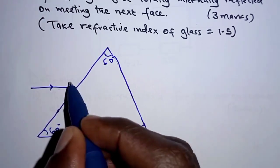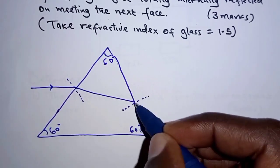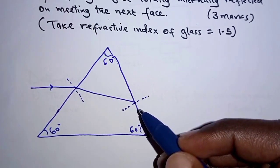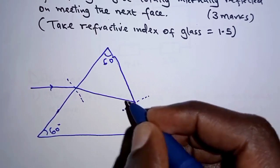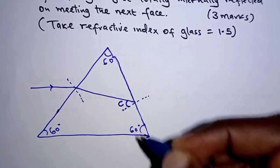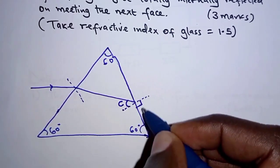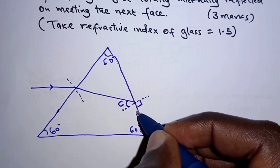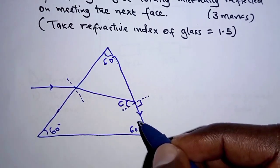And then it is refracted, and then on this other face we're told that total internal reflection is just about to take place. So that means that the angle of incidence here is the critical angle, and then on this other side we have 90 degrees, so the refracted ray is that.